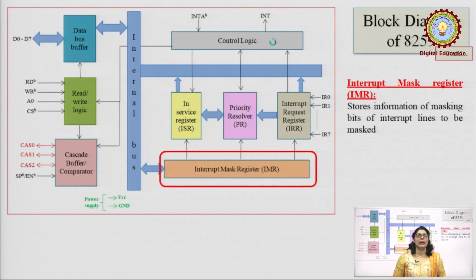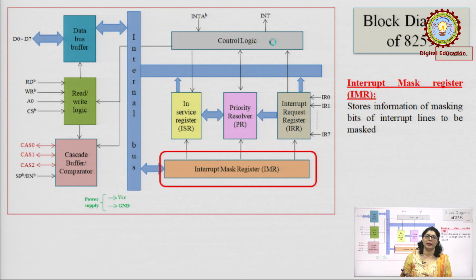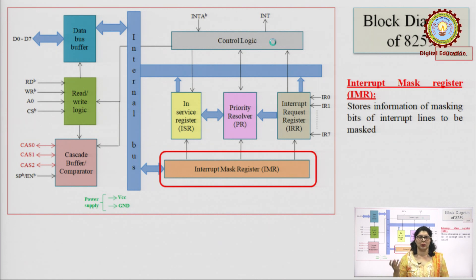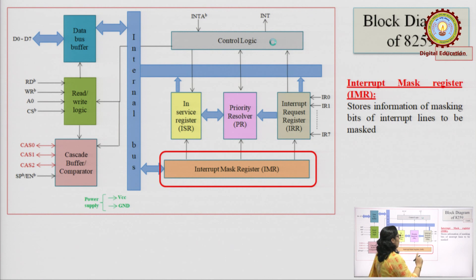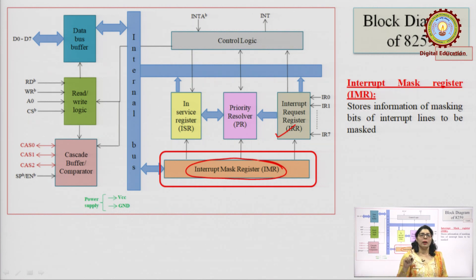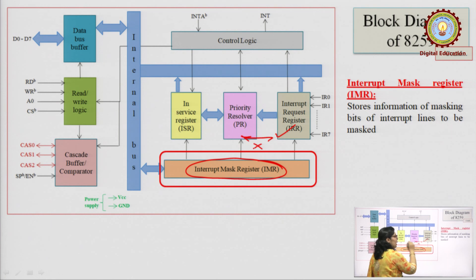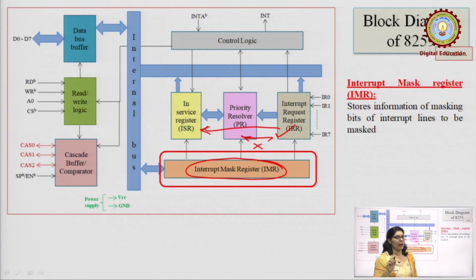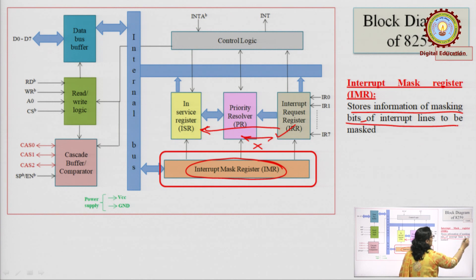Next is the Interrupt Mask Register, or IMR. If we have disabled an interrupt through programming, the disabling can be permanent or temporary — for example, if a device is out of service or no longer in use. As and when a request is placed in IRR, the IMR checks whether that interrupt has been masked (disabled). If it has been disabled, no further processing occurs. But if it is not masked, the entire processing starts for that interrupt. That is why it stores the information of masking bits of the interrupt lines to be masked.